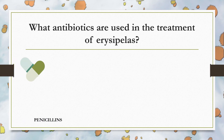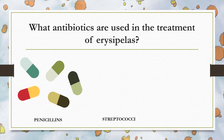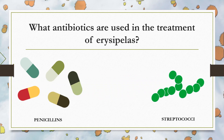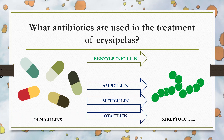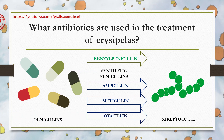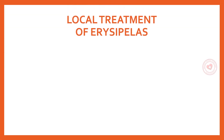What antibiotics are used in the treatment of erysipelas? Preference is given to the penicillin group. It should be noted that streptococci as a rule do not develop resistance to this group. It is better to administer benzylpenicillin or synthetic penicillins such as ampicillin, methicillin, and oxacillin.